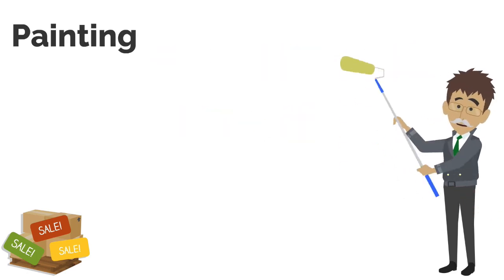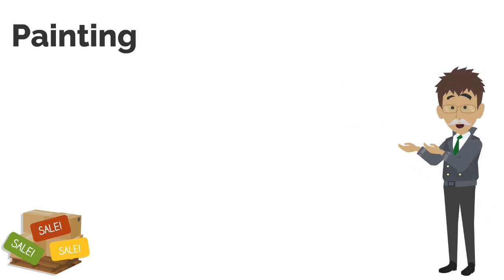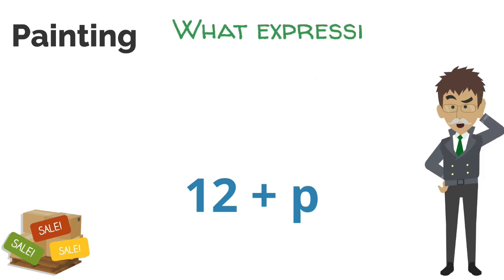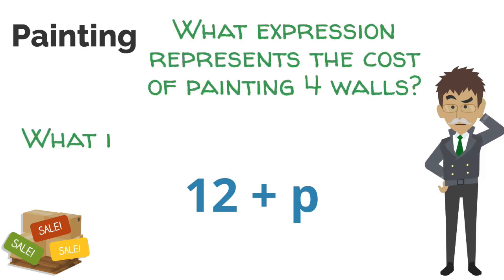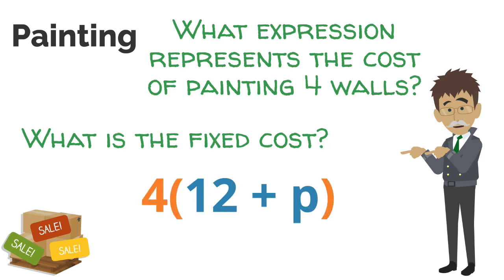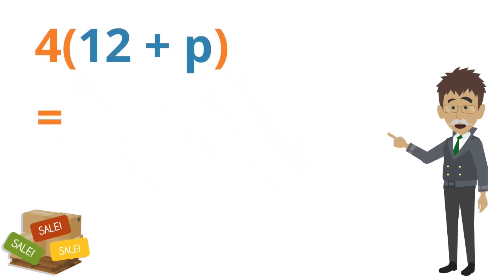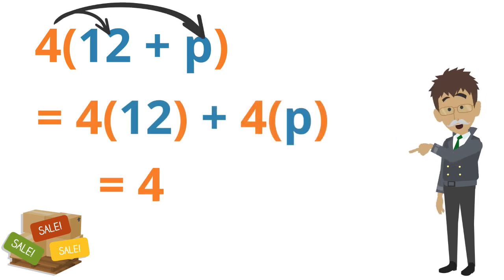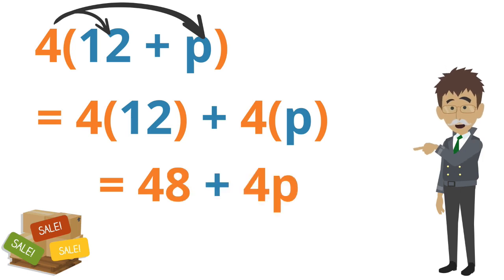I plan to paint the four walls of the room as well. The cost to paint one wall is $12 in materials plus the price of paint, represented by the expression 12 plus P. What expression represents the cost to paint the room, and what is the fixed cost? To create an expression representing the whole room, we multiply 12 plus P by 4 to represent the cost of the room. Applying the distributive property, I multiply the 4 by each of the terms inside the parentheses. 4 times 12 is 48, and 4 times P is 4P. The fixed cost to paint the room is $48.